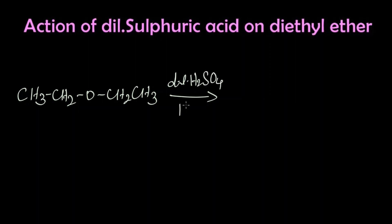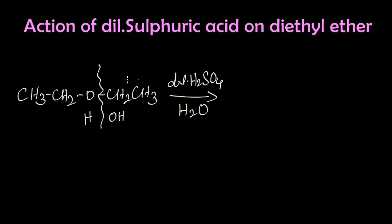A water molecule is added — that is dilute in the sense it's hydrolysis. What happens? The bond gets cleaved here in between this oxygen and this carbon. In H₂O, the H will be attached to this oxygen and the OH group will be attached to this ethyl group. So we get two molecules of ethyl alcohol, CH₃CH₂OH.